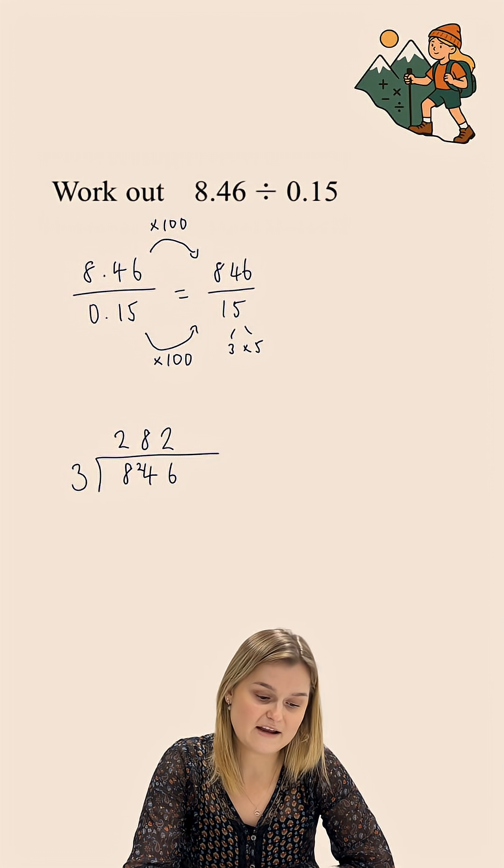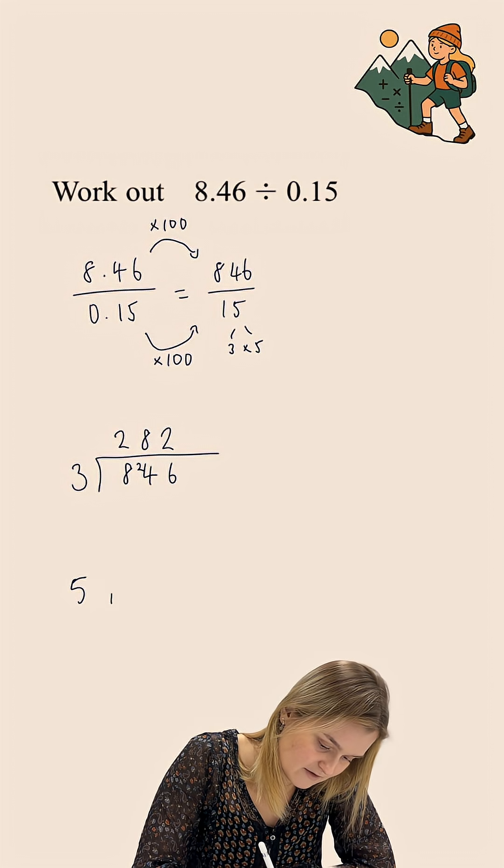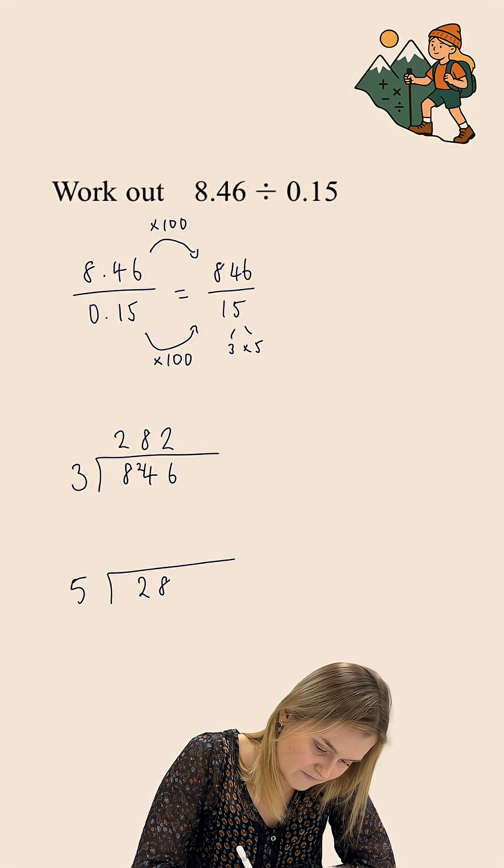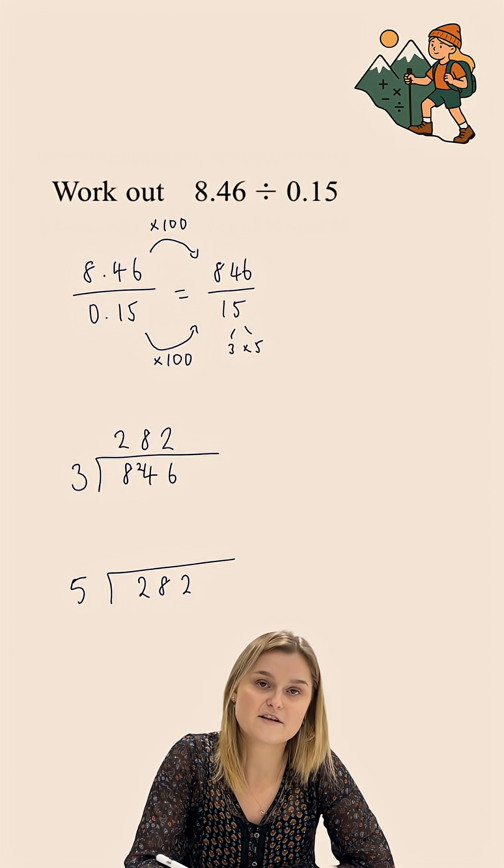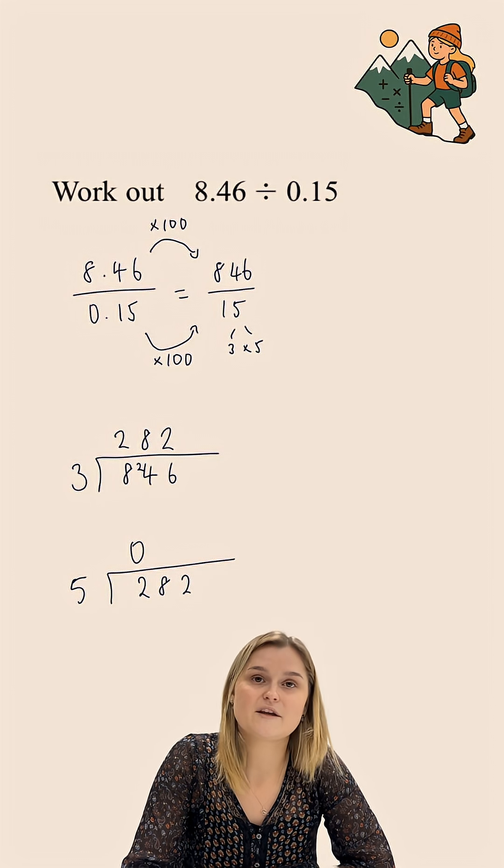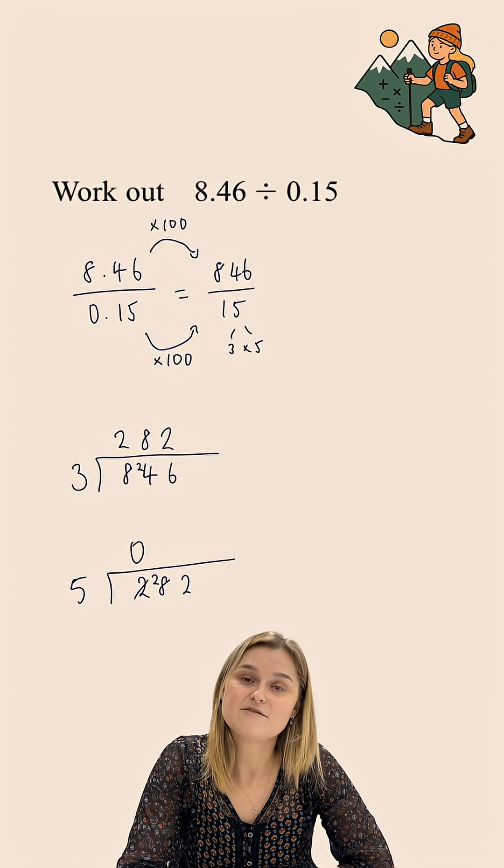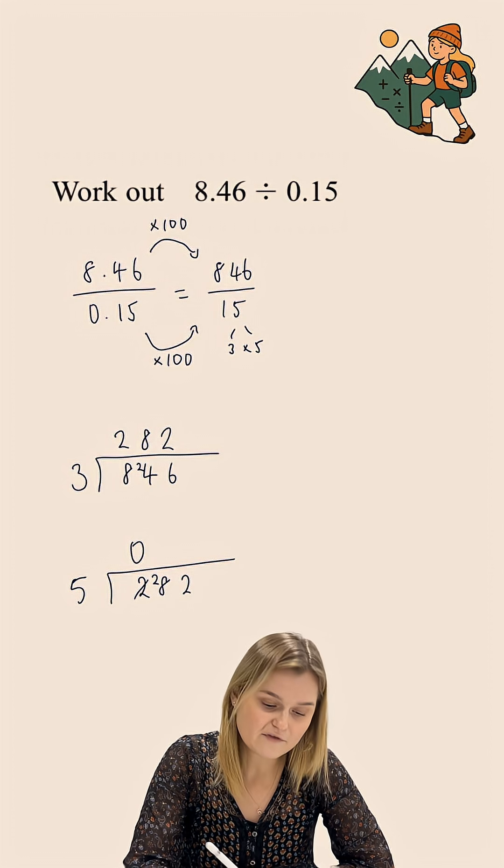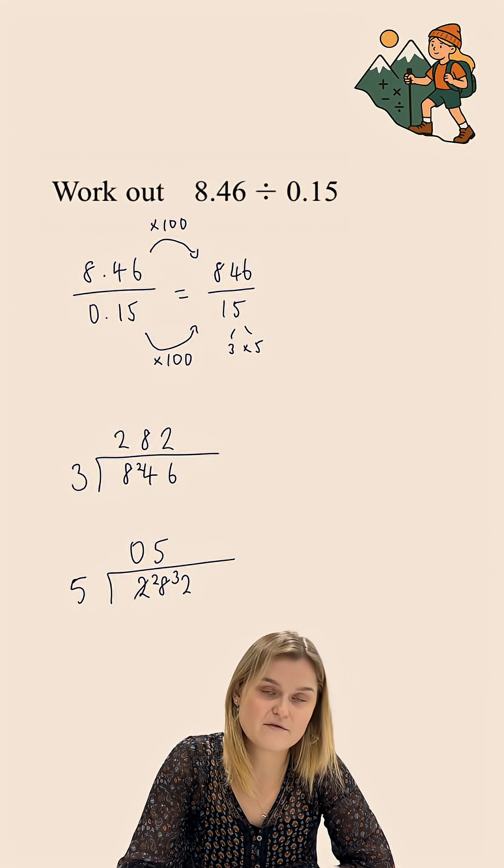But I need to divide this by 5 now because I actually wanted to divide by 15. So I'm now doing 282 divided by 5. Starting off, I'm doing how many 5's go into 2? No 5's go into 2, and so I'm going to carry the 2 over. I'm now doing how many 5's go into 28? 5 goes into 28 five times with a remainder of 3.